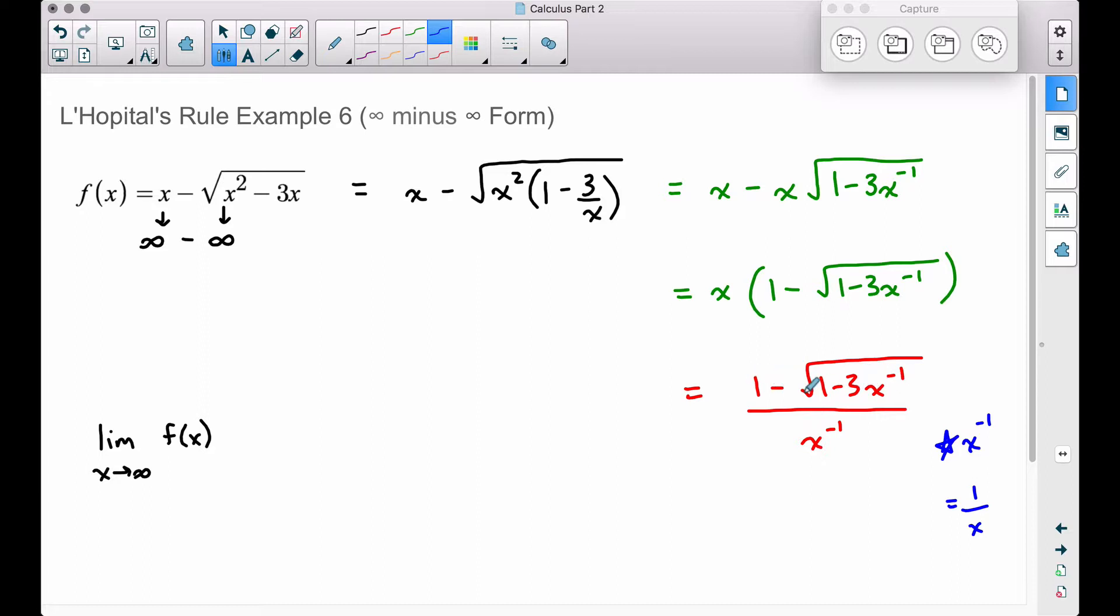If we plug a big number into here for this value of x, we get 1 minus the square root of 1 minus 3 times what? Well, x to the negative 1, remember that's 1 over x. 1 over a really big number is pretty much 0. So 1 minus 3 times 0 is 1.